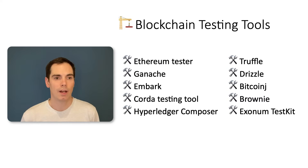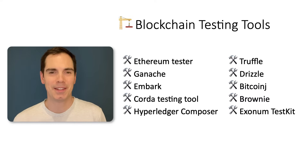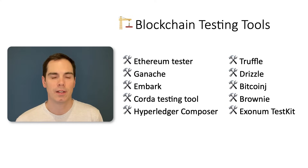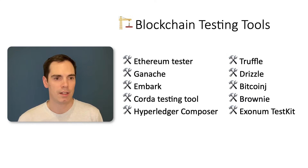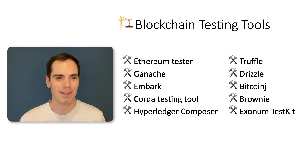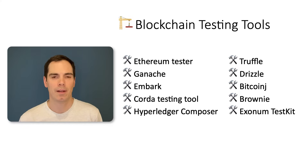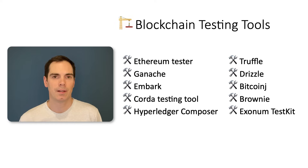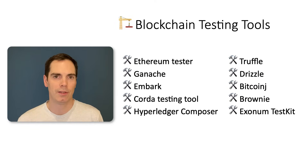Blockchain testing tools: I've listed many tools and won't go into detail on each. However, if you go to the description of this video, I've linked all the tools mentioned. There is for example the Ethereum tester, Ganache, Embark, Corda testing tool, the Hyperledger Composer, Truffle, Drizzle, BitcoinJ, Brownie, and the Enoxium test kit — all with different fields of interest. Take a look at them and see what's helpful for your blockchain application and toolset.